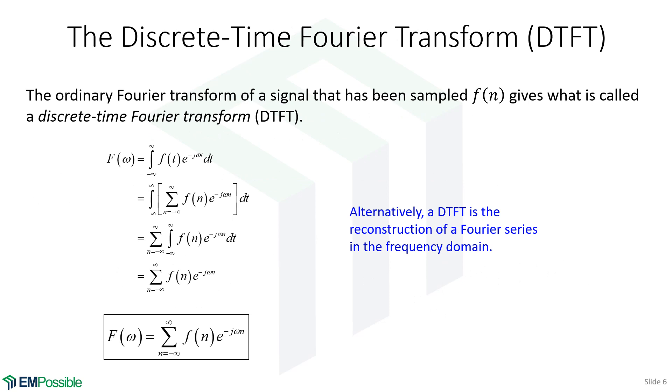Next, we have what's called the discrete time Fourier transform. So we have a signal now, but it is sampled. So we only know the function at discrete points. If we Fourier transform a sampled function, we get the discrete time Fourier transform.